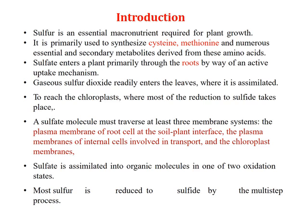Sulfate enters a plant primarily through the roots by way of an active uptake mechanism. Gaseous sulfur dioxide readily enters the leaves where it is assimilated, reaching the chloroplast where most of the reduction to sulfide takes place. A sulfate molecule must traverse at least three membrane systems: the plasma membrane of root cells at the soil-plant interface, the plasma membranes of internal cells involved in transport, and the chloroplast membranes. Sulfate is assimilated into organic molecules; most sulfur is reduced to sulfide by a multi-step process.